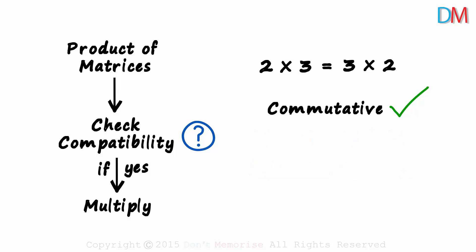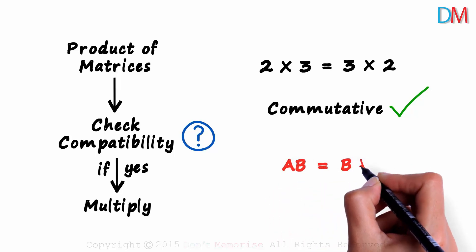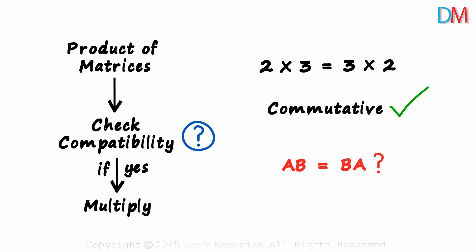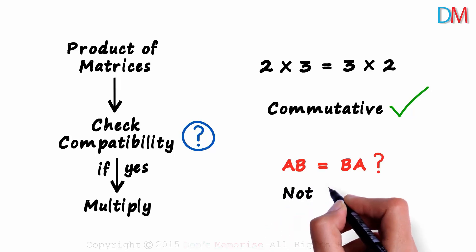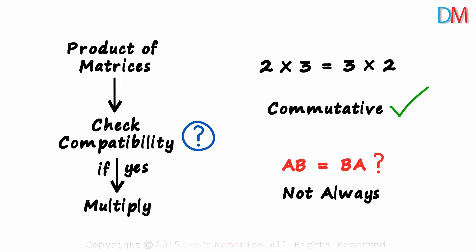But let's say there are two matrices A and B. Will A times B always be equal to B times A? The answer is not always. The order in which matrices are multiplied matters. So if we find out that A times B is compatible, it does not imply that B times A is compatible. We need to check for compatibility of each of the products.